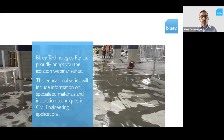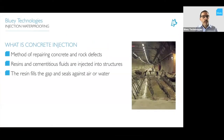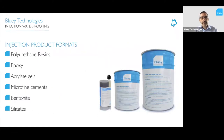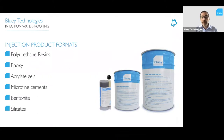So what is concrete injection? It's a method of repairing concrete and rock defects where we inject resins and cementitious fluids into the structure — into cracks and voids — and the resin fills that gap and seals against either air or water. We use pumps and liquids to repair structures. The types of products we can use include polyurethane resins, epoxy resins, acrylate gels, microfine cements, bentonite, and silicates. We'll talk about how to use each of those depending on the situation.